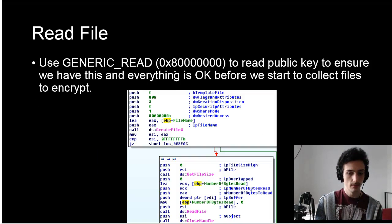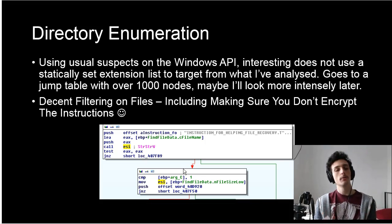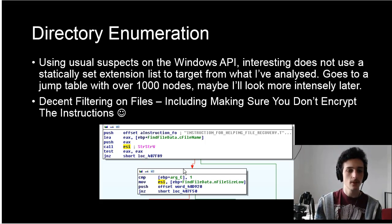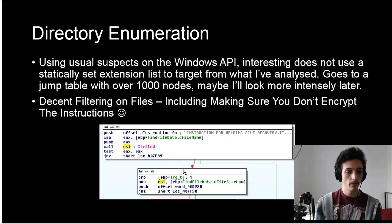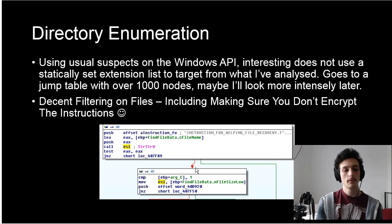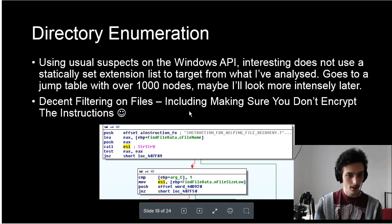Then we start directory enumeration. I looked at this a little more intensely but pulled back. From what I could see, looking at the character extensions and how it was walking directories, it wasn't using a preset extension list - it was doing it differently. I went into a subroutine and found a jump table with over a thousand nodes, so I stepped back from that. There is decent filtering on files, including importantly making sure you don't encrypt the instructions file - some ransomware is less careful about that.